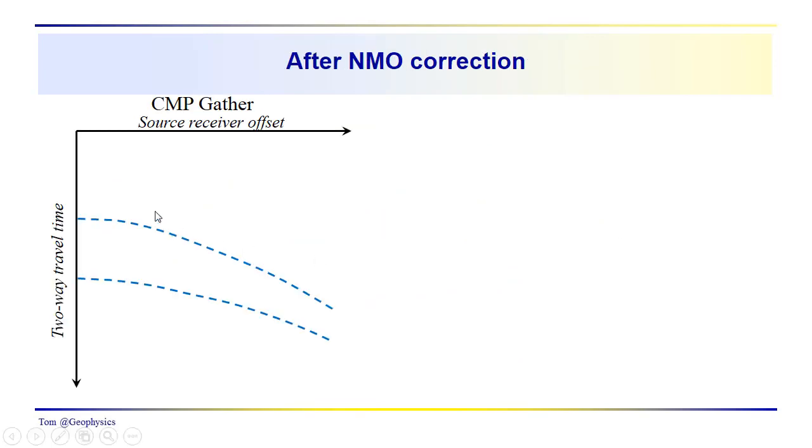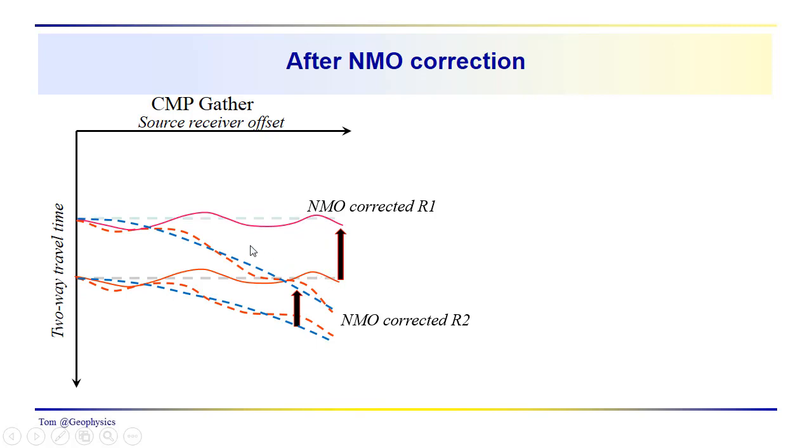Now ideally when you sort your sources and receivers into a common midpoint gatherer, you'd expect to see nice hyperbolic reflections from flat layers. After taking a look at the situation that we presented you with, you know that you're going to have some irregularities in this hyperbolic nature of the reflection due to changes in topographic relief and thickness of the LVL. So when we make the NMO correction, we're going to get a corrected reflection event which is not entirely flat.